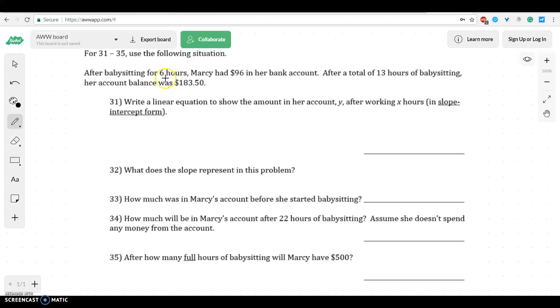The first one says after working for six hours, Marcy had $96 in her bank account, and then after working for 13 hours, she had $18.50. When I'm reading that, I'm like okay, there's a couple pieces of information we could get. We can figure out how much she made per hour, so we need to figure out money per hour.